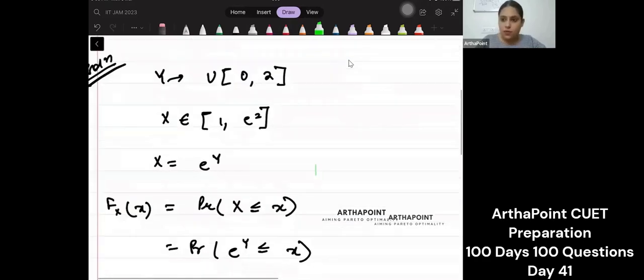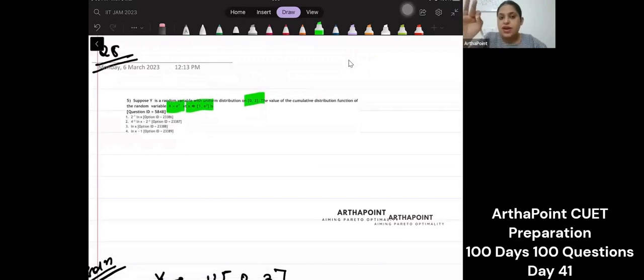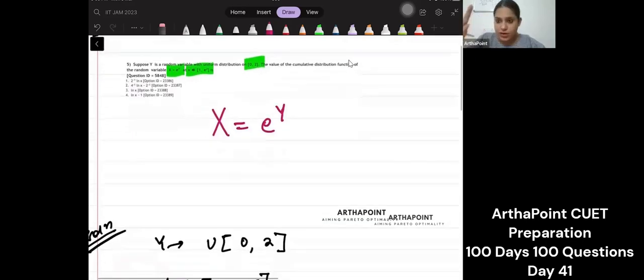So y is uniformly distributed. x belongs from 1 to e square. My aim is to find CDF of the variable x where this variable x is e to the power y. This is the CDF that I want to find out.